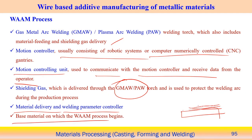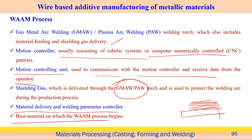The welding parameters — voltage, current, and welding speed — are all controlled. Starting with a base plate, layer-by-layer deposition of metal is performed using the arc welding system. The wire arc additive manufacturing process can be GMAW-based, GTAW-based, or plasma arc welding-based. These three types of arc welding processes are most suitable for wire-based additive manufacturing.